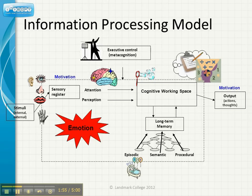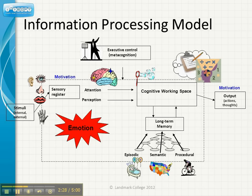If you remember from our session, there were three types of long-term memory. Episodic, which refers to particular episodes in time that you remember from your past. Semantic, which means meaning — so you remember definitions for terms, what different words mean, and facts that you remember. And procedural, which is basically remembering how to do things: how to ride a bike, how to play baseball, and so on.